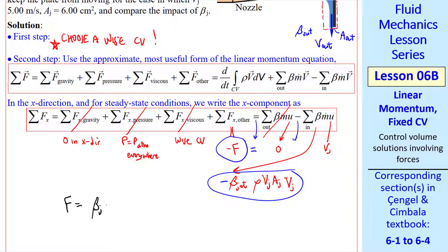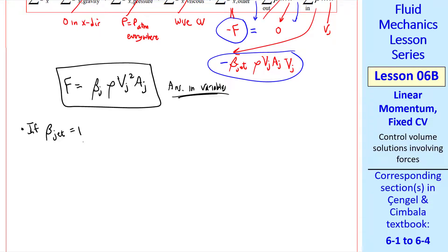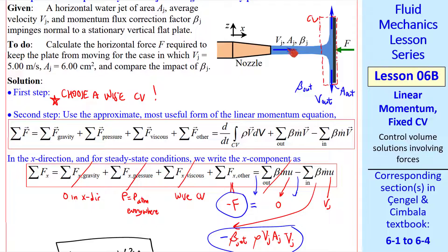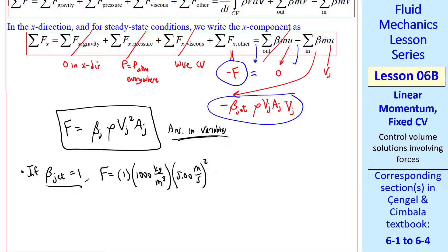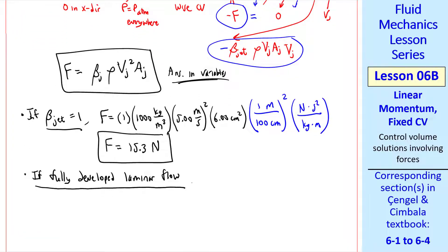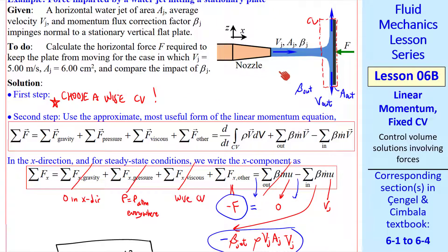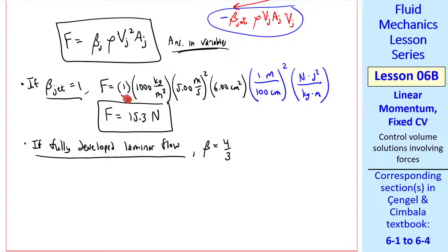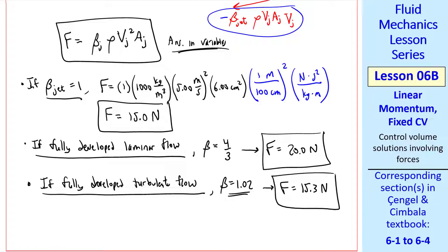The problem asks us to compare the impact of beta. So I'm going to do three cases. If beta jet is one, in other words we consider this to be a uniform jet, then we get f equal 1, times rho, times vj squared, times aj, and two unity conversion factors. To get our answer in newtons, I get 15.0 newtons. If fully developed laminar flow from this round pipe at the nozzle, beta here would be 4/3. Repeating the calculations, with the only difference being a different beta, we get 20.0 newtons. Finally, if fully developed turbulent flow, we'll use beta equal 1.02, and we get 15.3 newtons. If we had ignored beta, we get 15.0. So for turbulent flow, it's not that big of a difference. But beta is very critical for problems with laminar flows. But I advise you to always include beta in any of these kind of momentum problems.